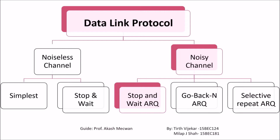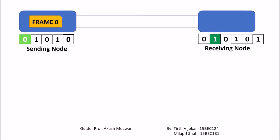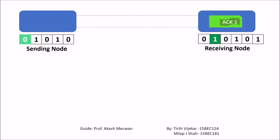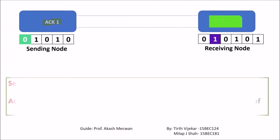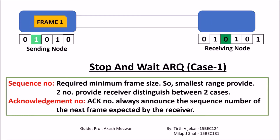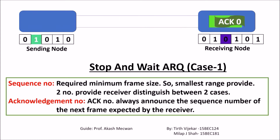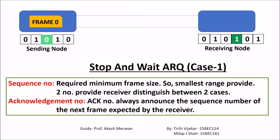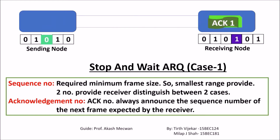Now let's jump to the noisy channel. First, we will learn about Stop and Wait Automatic Repeat Request. Stop and Wait ARQ is a noisy channel protocol, so frames can be damaged or lost, and out-of-sequence transmission can happen. To solve that, we assign sequence numbers to frames. In this protocol, only two sequence numbers are used: zero and one.